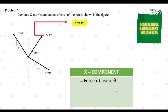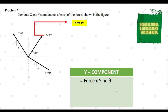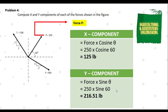Next, we solve the X and Y components of force P. For the X component, using force times cosine theta, we substitute: 250 cosine 60. We have a positive value because the direction is going up to the right. The X component is 125 pounds. For the Y component, using force times sine theta, we substitute: 250 sine 60. We have a positive value because the direction is going up to the right. The Y component is 216.51 pounds.